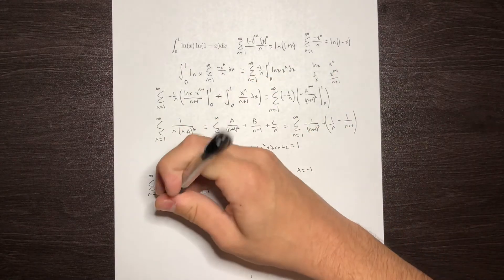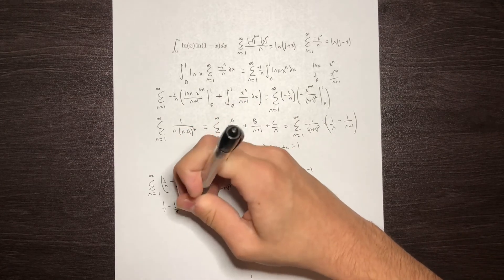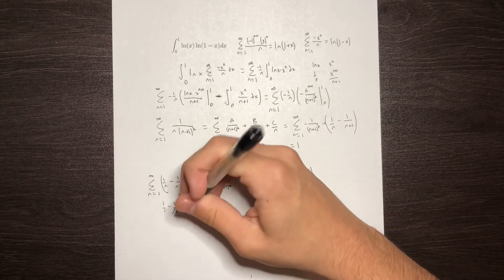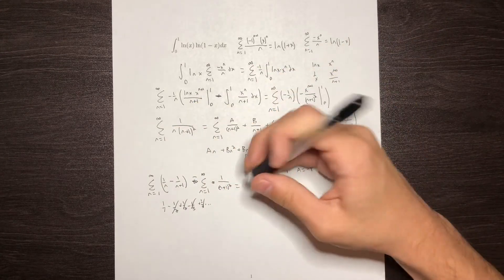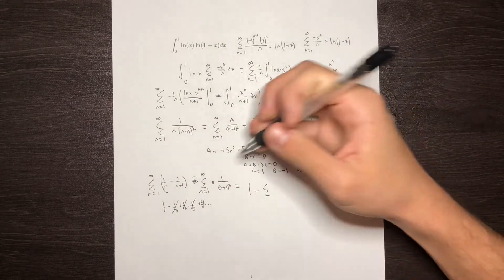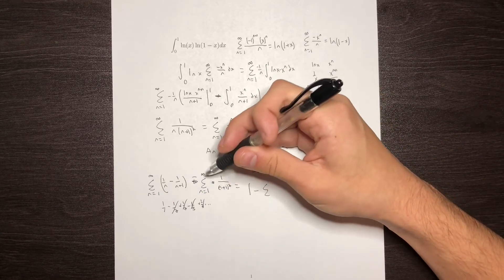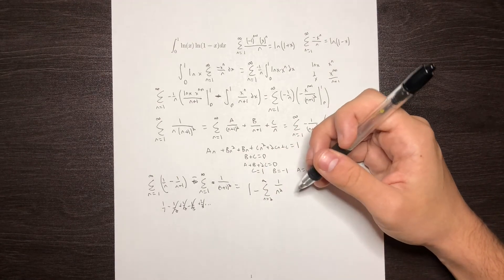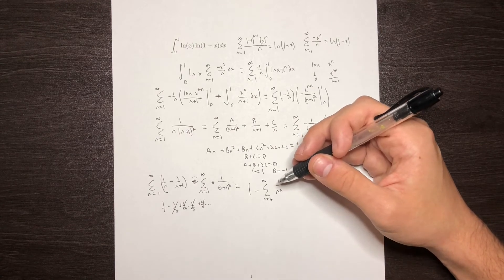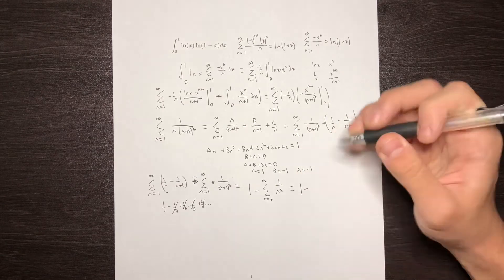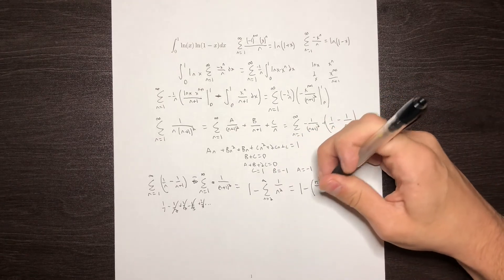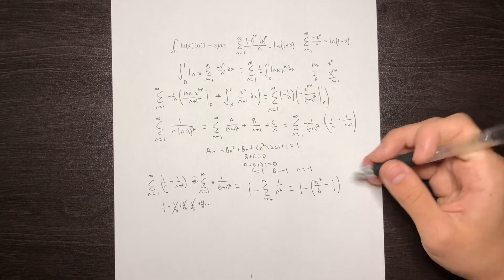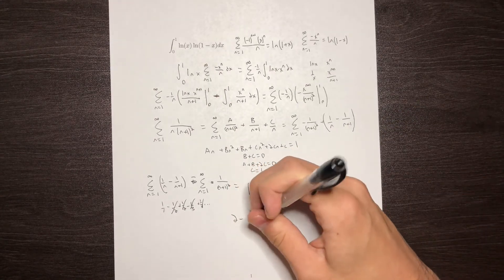The telescoping series — writing it out: 1 minus 1/2, plus 1/2 minus 1/3, plus 1/3, and so on — all terms cancel leaving just 1. So that first sum equals 1. For the second sum, re-indexing from n equals 2 to infinity of 1 over n squared. We know from the Basel problem that the sum from n equals 1 to infinity of 1 over n squared equals pi squared over 6, so starting from n equals 2 gives pi squared over 6 minus 1. Combining: 1 minus the quantity pi squared over 6 minus 1, which distributes to 2 minus pi squared over 6. And we're done.